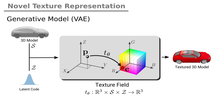Furthermore, we used our novel representation for a generative model. Our setup consists of a variational autoencoder with the texture field as the decoder. At inference, we can sample novel textures for a given 3D object.